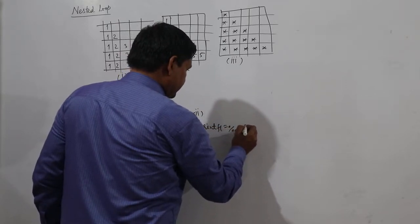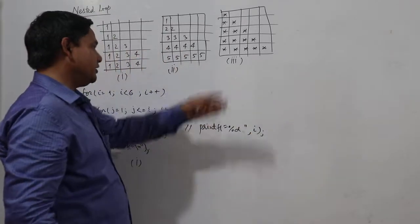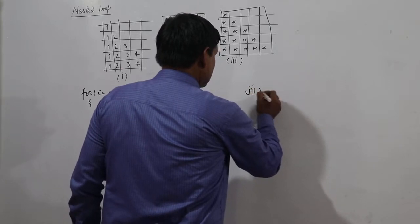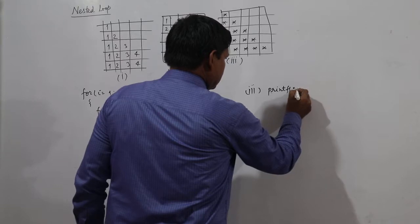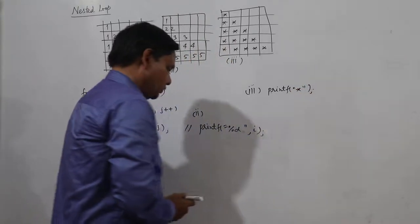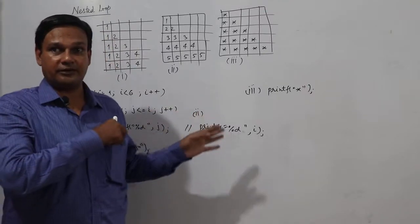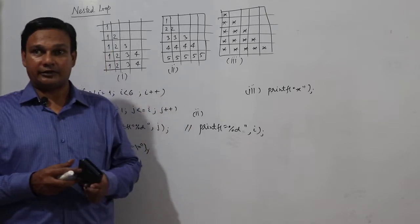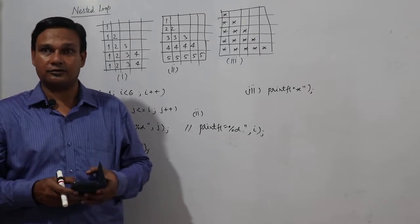For the third part, I will be printing percent d i. Then I will print a tab and then a star only. So these are some patterns. I will write some code for some other patterns also.